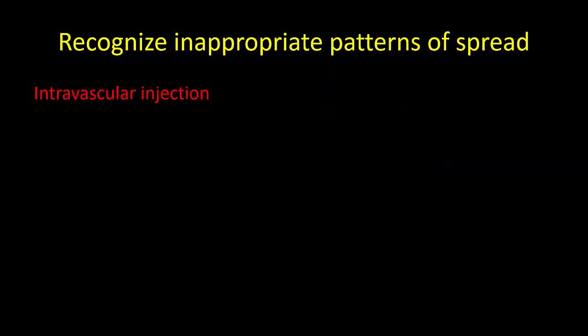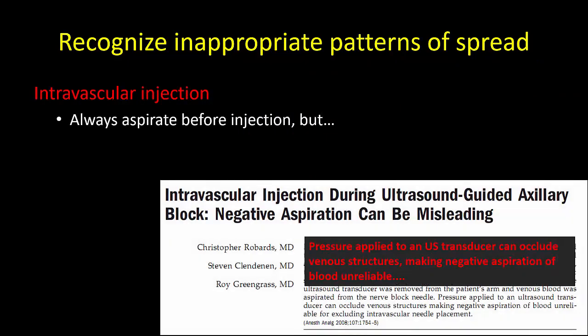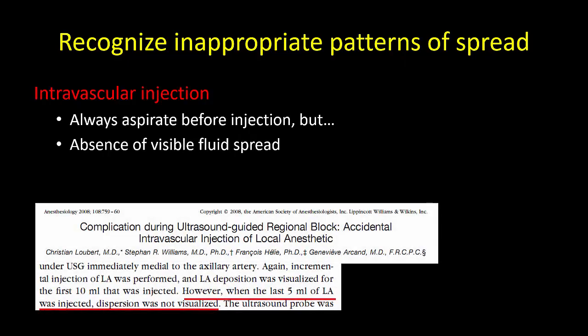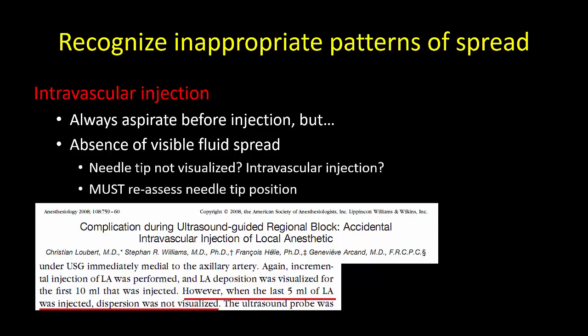It goes without saying that intravascular injection should also be avoided. Aspiration before injection should always be done but it can be misleading, particularly if veins are collapsed or if too much force and negative pressure is applied to the plunger by your assistant. The key thing to note is whether or not you see fluid spread when you do your test injection of half a ml. If you do not, it must prompt re-evaluation of where the needle tip is. It may simply be that you have not got the needle tip in proper alignment in view, or it may mean that the local anesthetic is entering a blood vessel. Regardless, carefully reassess as to where your needle tip is actually located.